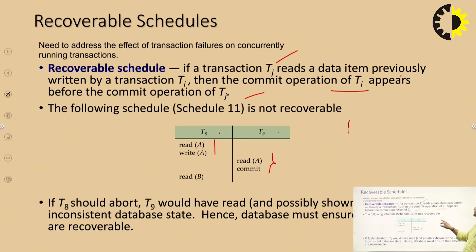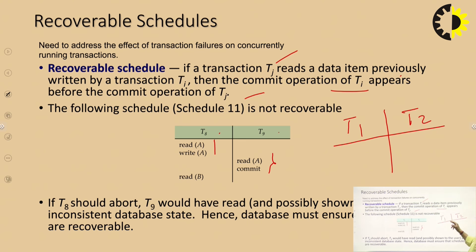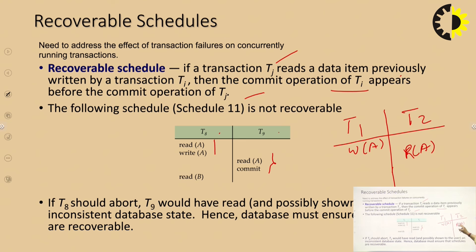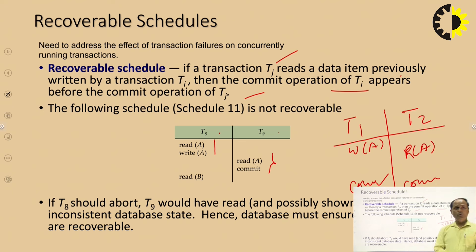If transaction Tj reads a data item written by another transaction Ti, then the commit of Ti must appear before the commit of Tj. For example, if T1 writes and T2 reads that value, then commit of T1 must appear before commit of T2. If this condition is met, it is a recoverable schedule; if not, it is a non-recoverable schedule.